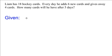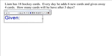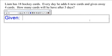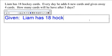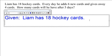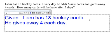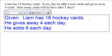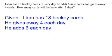The first thing you need to do is write down the important information that's given. In this case, we need to know how many cards he has to begin with and how many he is giving away and getting each day. So Liam has 18 hockey cards, he gives away four each day, he adds six each day. That's the information given to us.